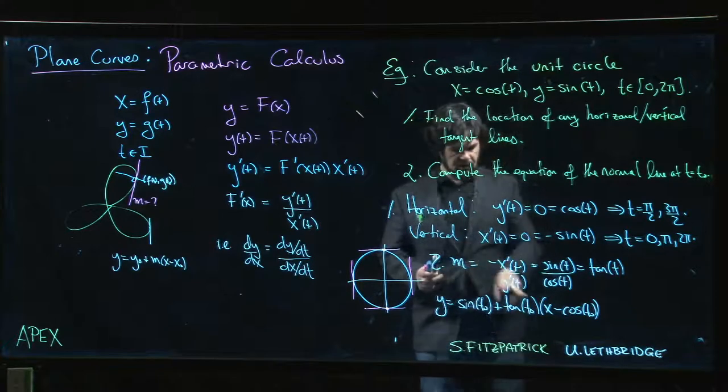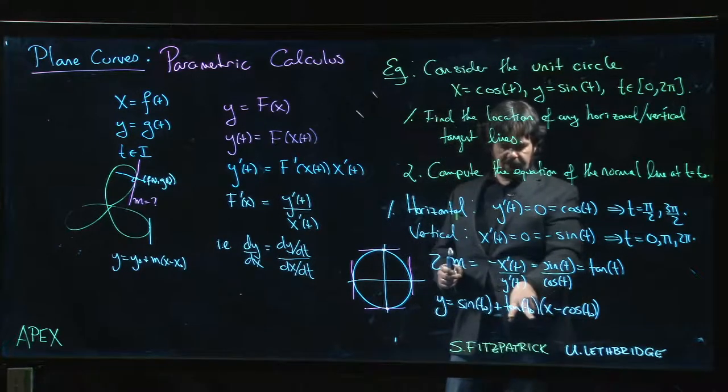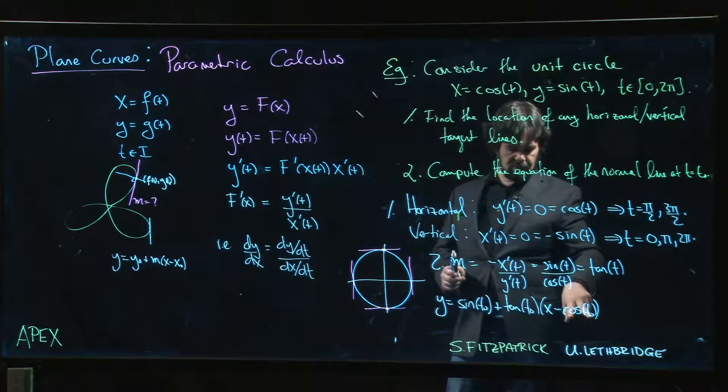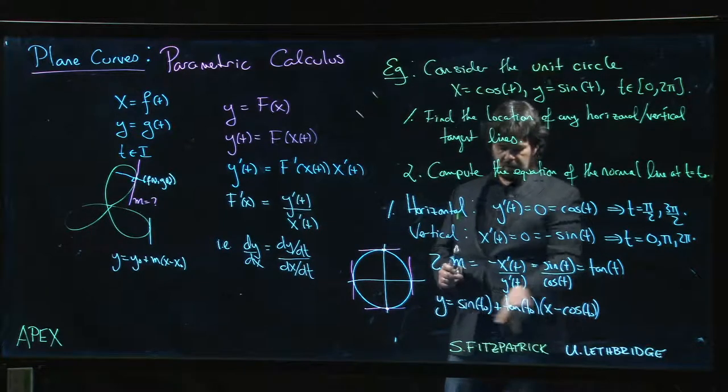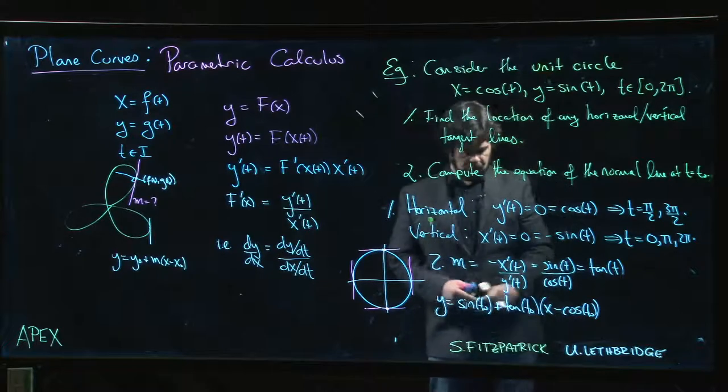tan(t₀) times (x - x₀), which is cos(t₀). But notice that this actually simplifies. If we multiply tan through the brackets, we get x times tan(t₀). Tan(t₀) times cos(t₀) gives me sine, so this negative sine cancels with that one. We actually just get tan(t₀) times x.